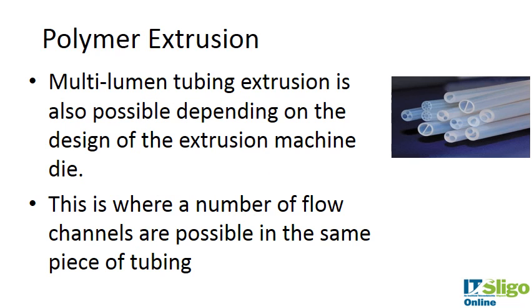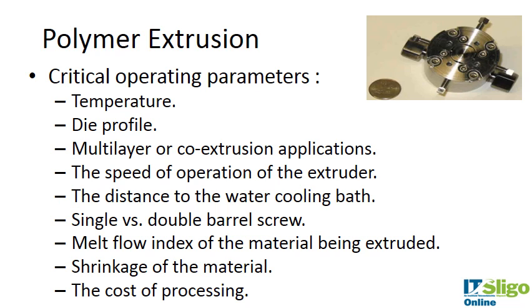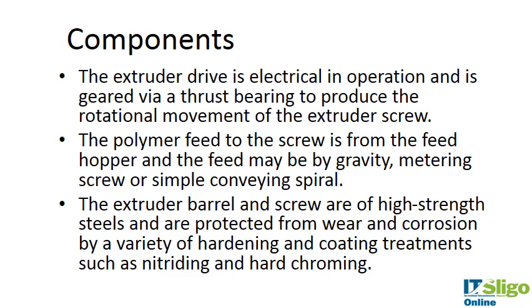You can make multi-lumen tubing, which is getting more and more common in the medical device industry. Depending on the design of the extrusion machine die, a number of flow channels are possible in the same piece of tubing. The critical operating parameters for extrusion are the temperature of the barrel and screw, the die profile, whether it's a multi-layer or co-extrusion — meaning two different polymers — and the speed of the operation.